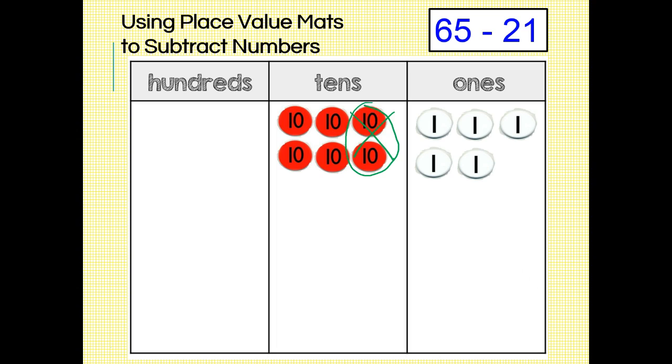That's right, two tens disks and one ones disk for 21. What do we have left? Yes, four tens disks and four ones disks. So 65 minus 21 equals 44.